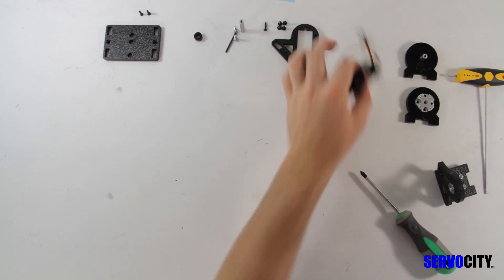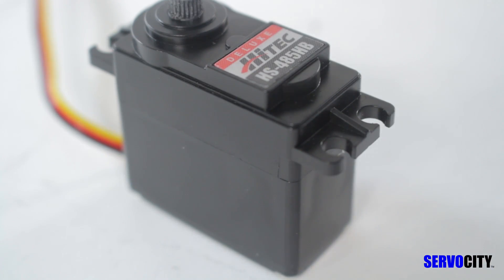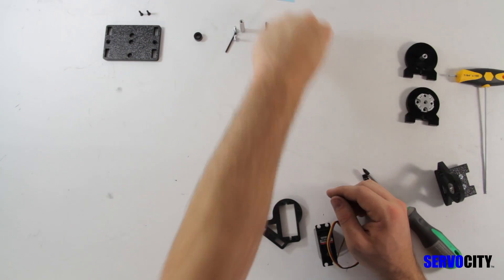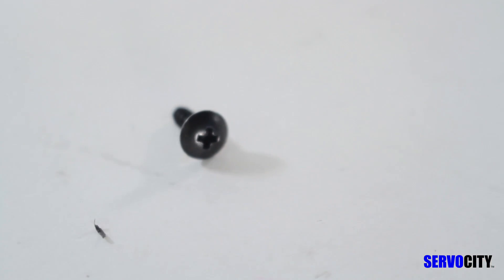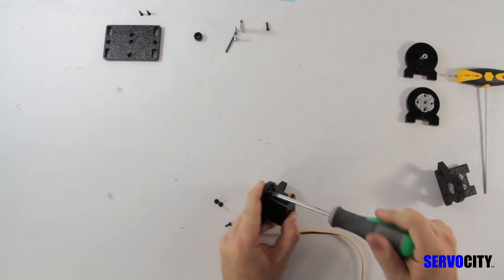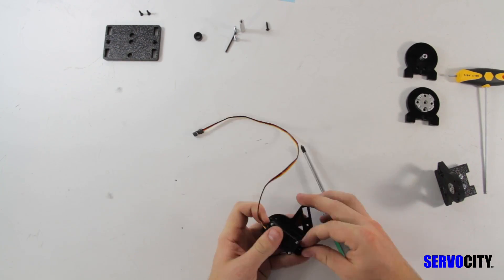For this video, we are using a Hitek 485HB servo. You will attach this servo to the smooth side of the ABS plate using the black 3 1/8 inch truss screws. You will need to leave these screws a little loose so that you will be able to adjust the position of the servo later on.